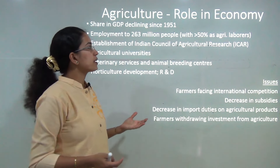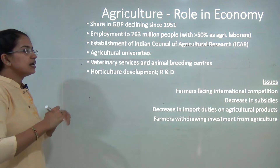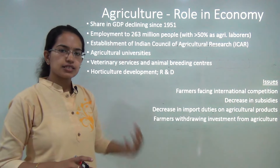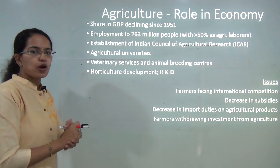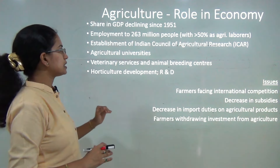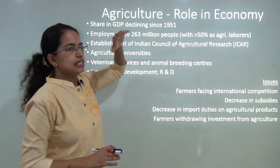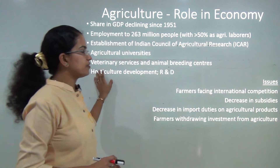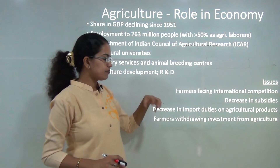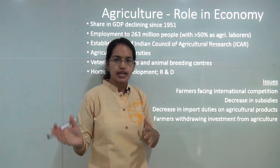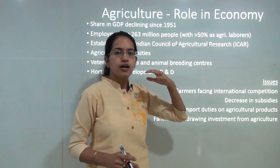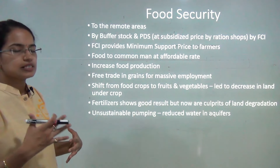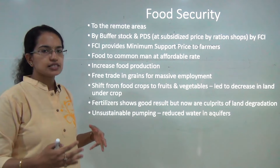Agriculture plays an important role in the Indian economy. However, the share in GDP is declining — more than 50% of people are engaged in agricultural activity but generate less than 25% of GDP, indicating huge underemployment and disguised unemployment. To reform agriculture, we need more agricultural universities, research and development, veterinary services, animal breeding, and horticulture development. Issues include farmers withdrawing investment from agriculture, decrease in subsidies, higher competition from foreign markets, lower import duties, and cheaper agricultural products coming in from other countries.